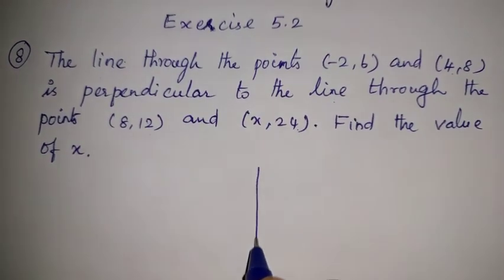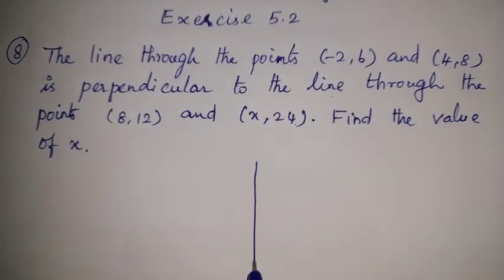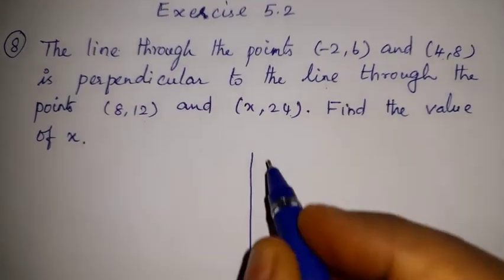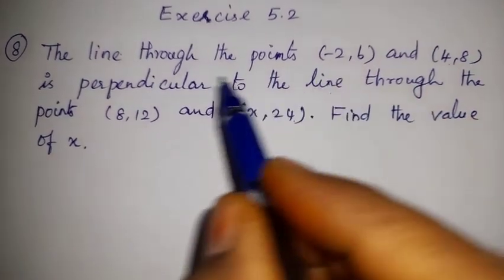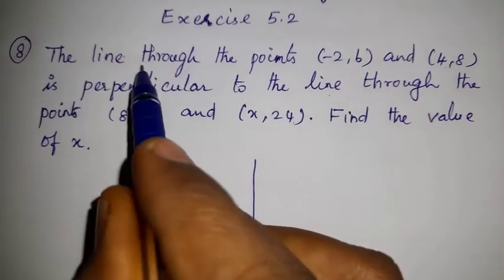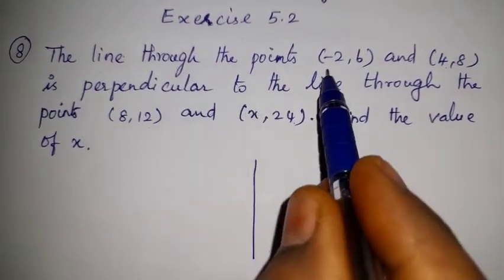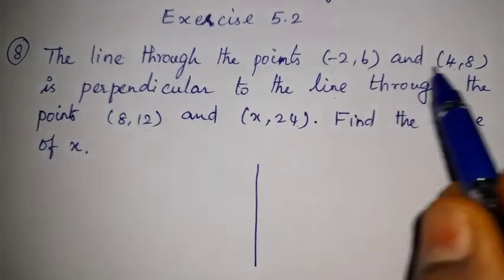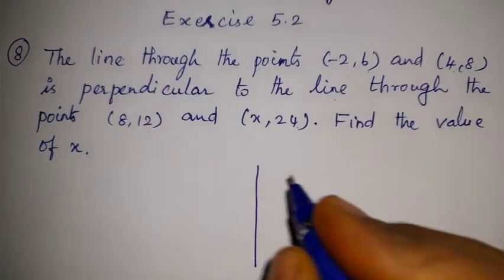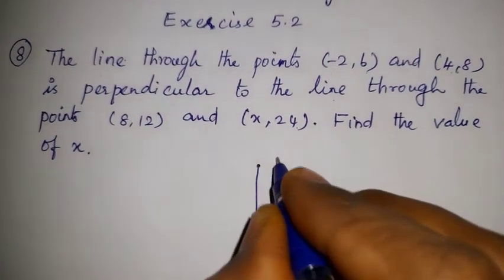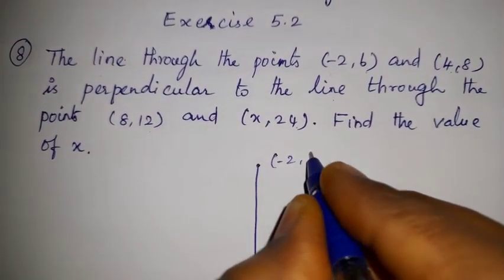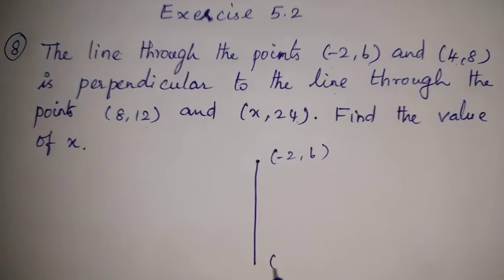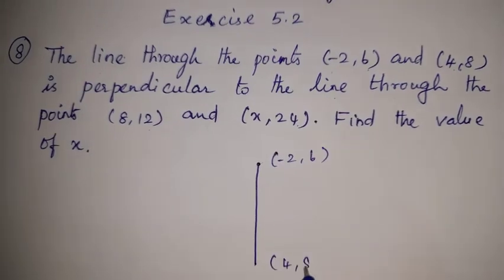First line — let's get this. First line through the points: minus 2, 6 and 4, 8.